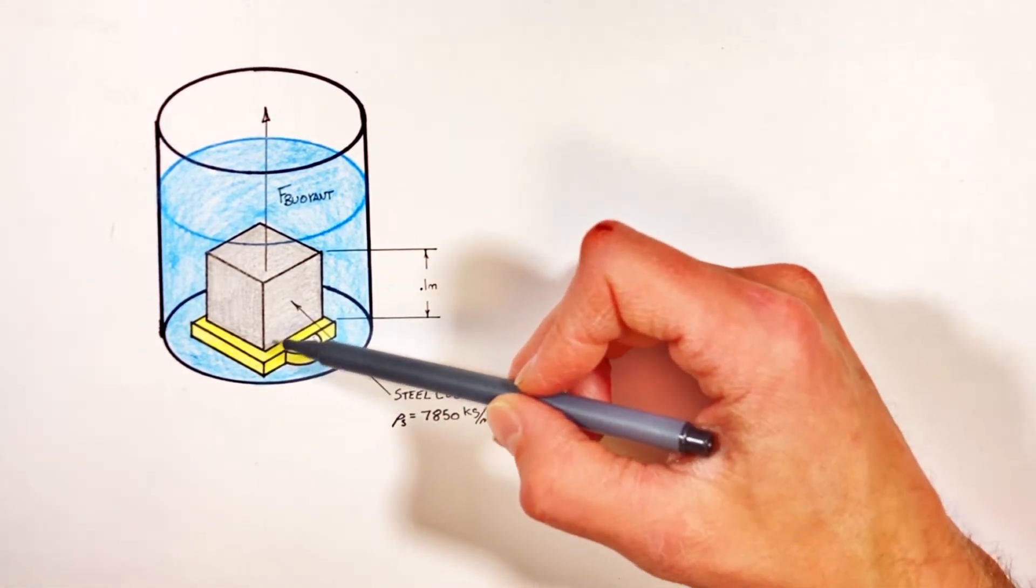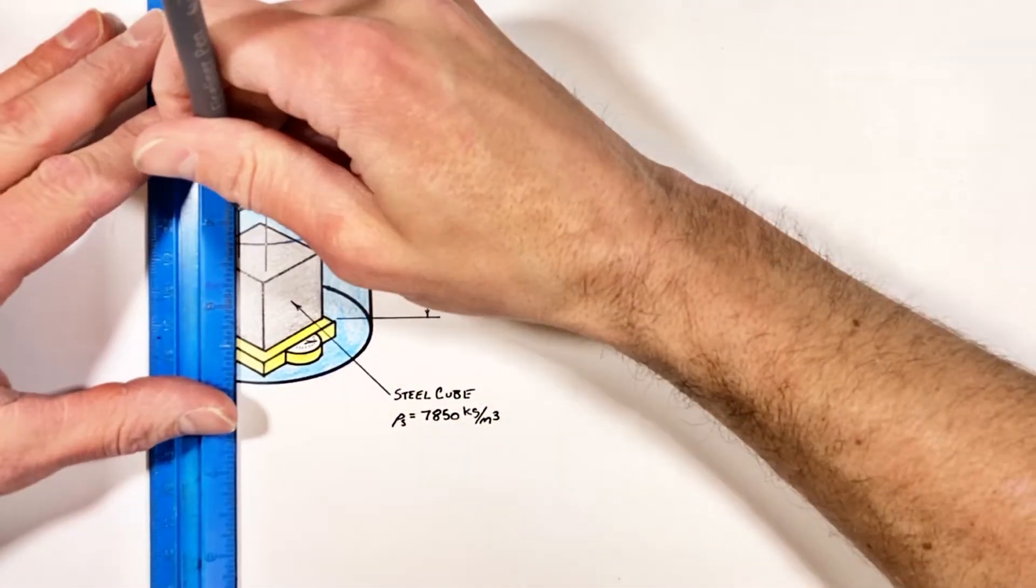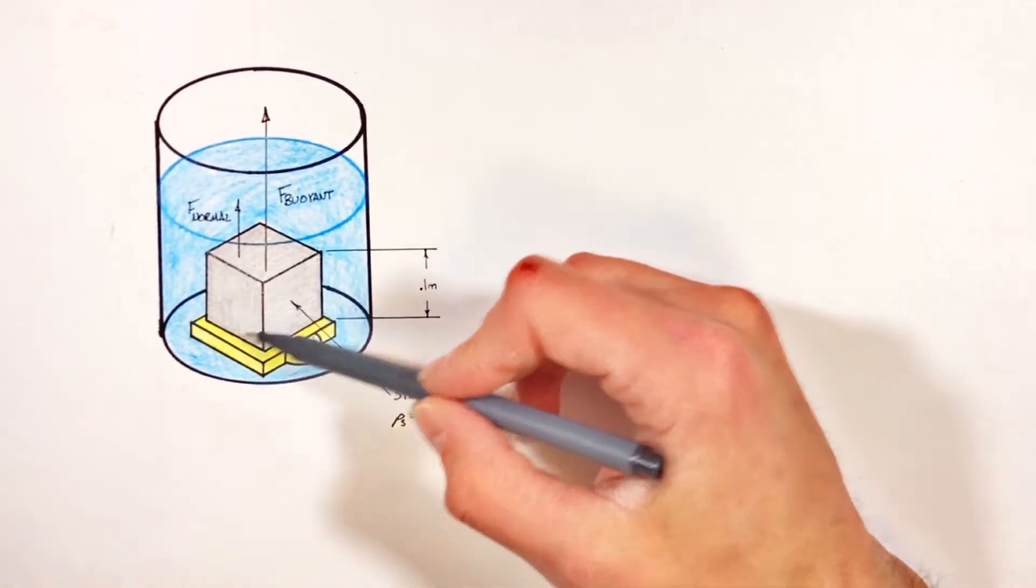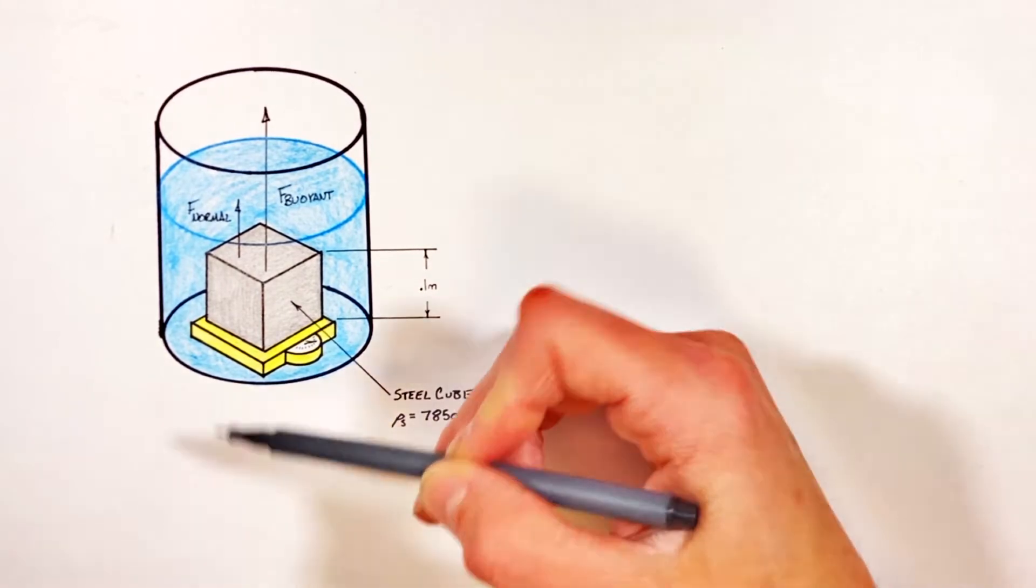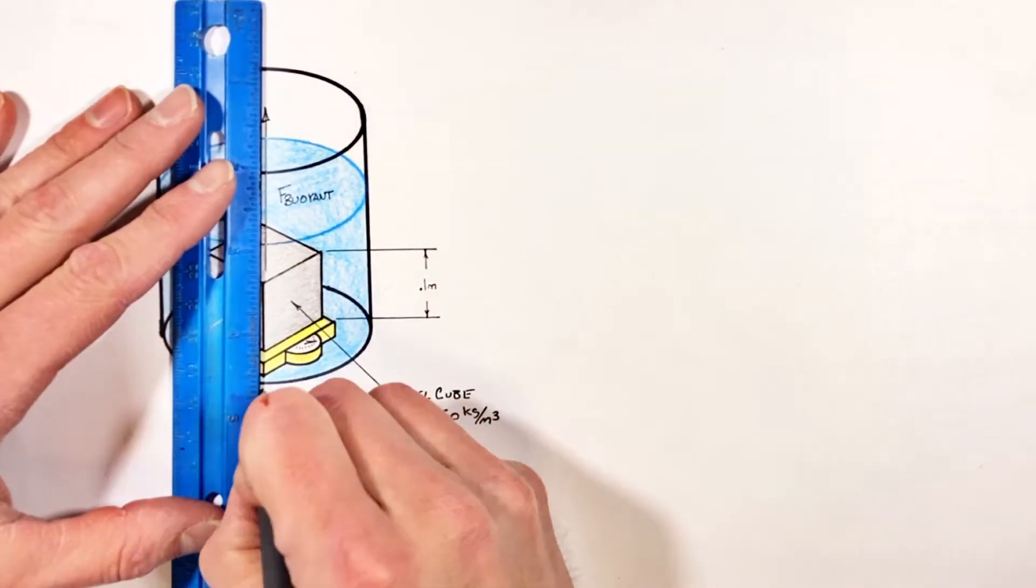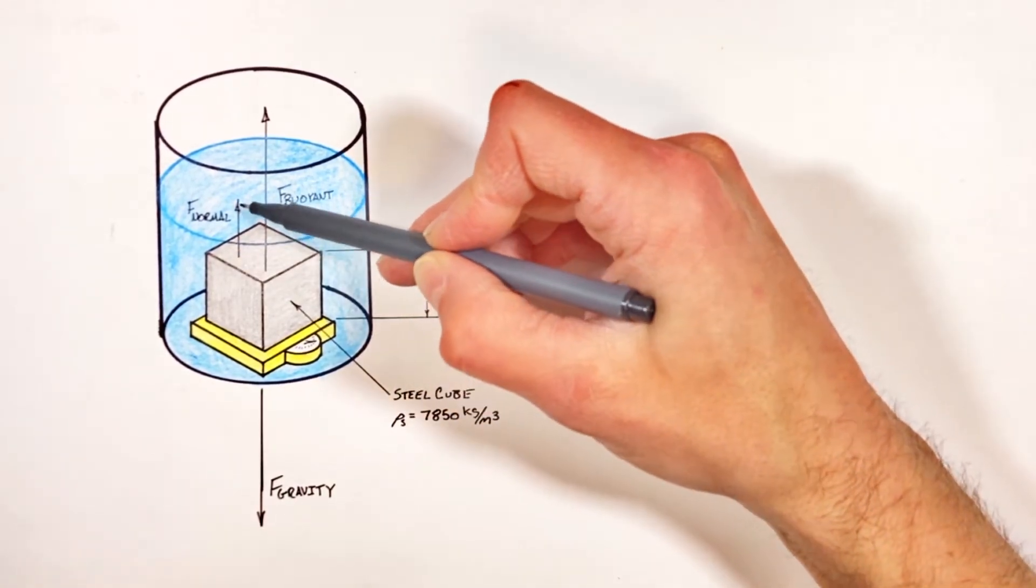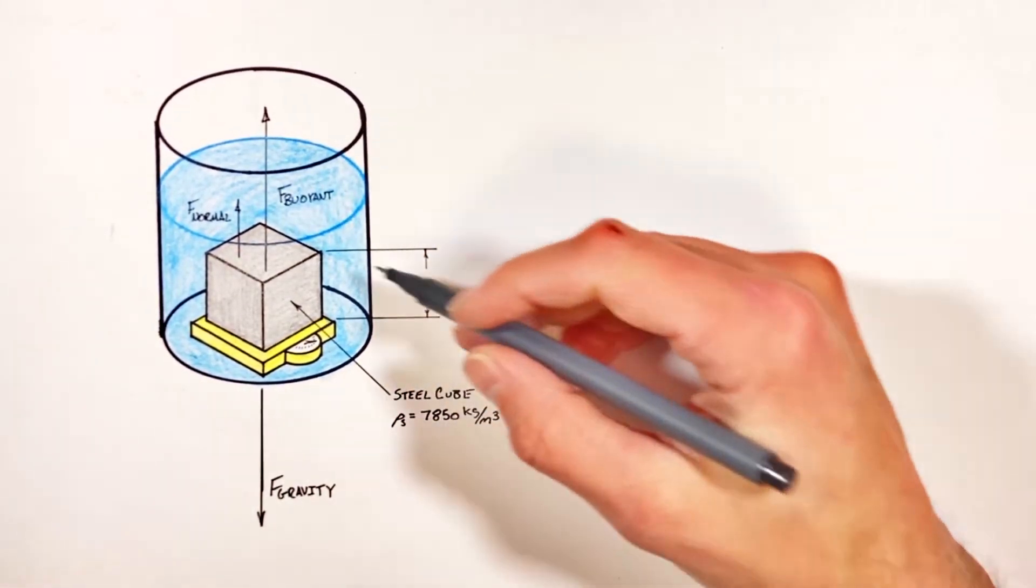Now these two forces acting upward are opposing the pull of gravity which is trying to pull this block downward. So to solve for the reading on this scale, which is nothing other than the normal force on the block, we're going to need to look at the sum of all forces acting on this block in the y-axis.